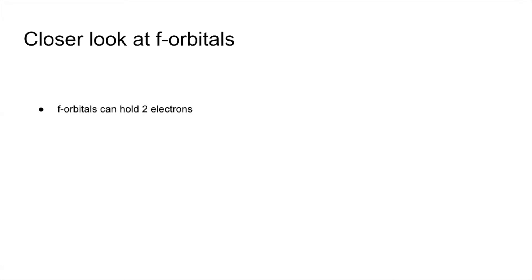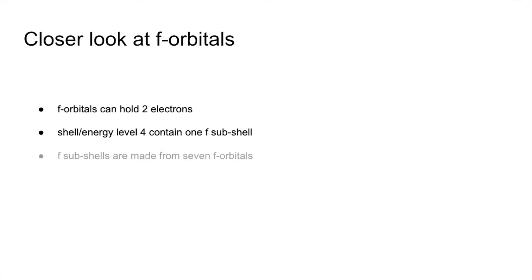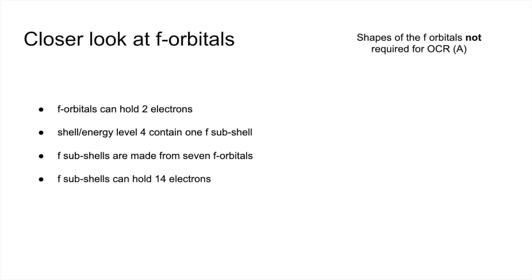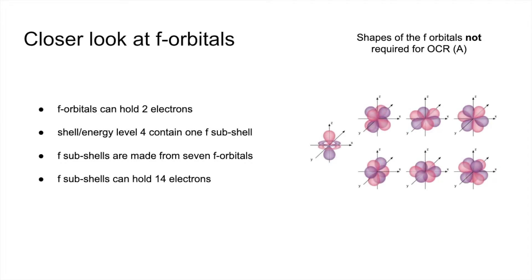F orbitals can hold two electrons. Shell 4 contains an F subshell. They're made from seven separate F orbitals, so the subshell can hold 14 electrons. Again, not required at OCR, but that's what they look like, and all seven of them put into one diagram gives you the subshell.